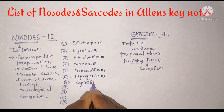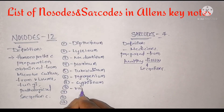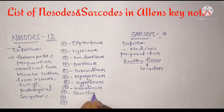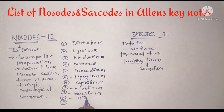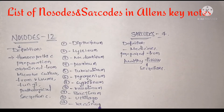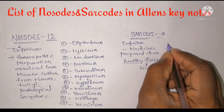Continuing the nosode list: seventh, Syphilinum; eighth, Pyrogenum — and these are among the 12 nosode remedies present in the LNSK notes.